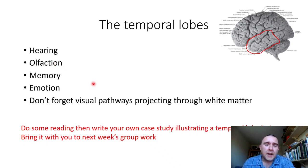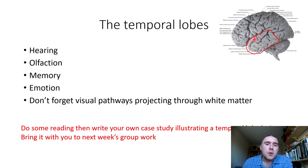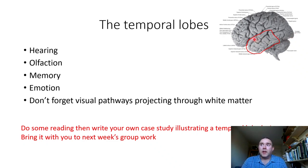As is the case for the parietal lobe, the temporal lobe also contains visual fibres — third-order visual fibres going from the lateral geniculate to the occipital lobe — so a temporal lobe lesion could feasibly cause a visual field defect.